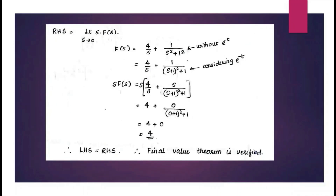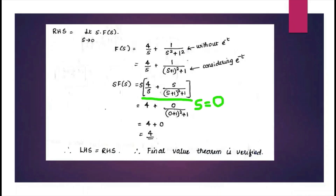On the RHS, it is the limit as s → 0 of s·F(s). F(s) = 4/s + 1/(s² + 1) for the sin(t) part; applying the shifting property for e^(−t), replace s with (s + 1), giving 1/[(s + 1)² + 1]. Multiplying by s: s·F(s) = 4 + s/[(s + 1)² + 1]. Substituting s = 0, the second term vanishes, giving 4. Both LHS and RHS equal 4, so the final value theorem is verified.